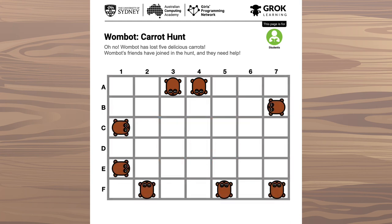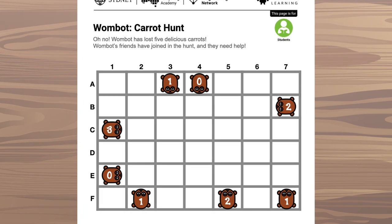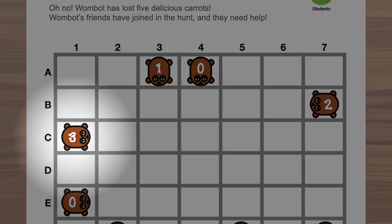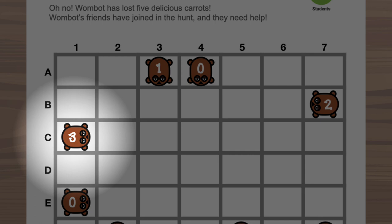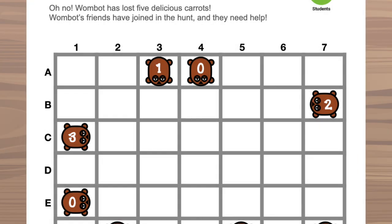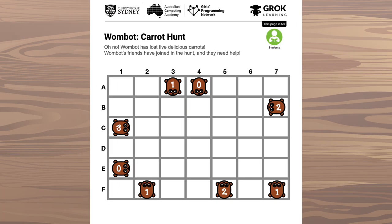Some of Wombot's mates have come to help too. Each of them is looking around for carrots and telling you how many they can see. So this Wombot, for example, can see exactly three of the lost carrots somewhere along the lines looking forwards and sideways.